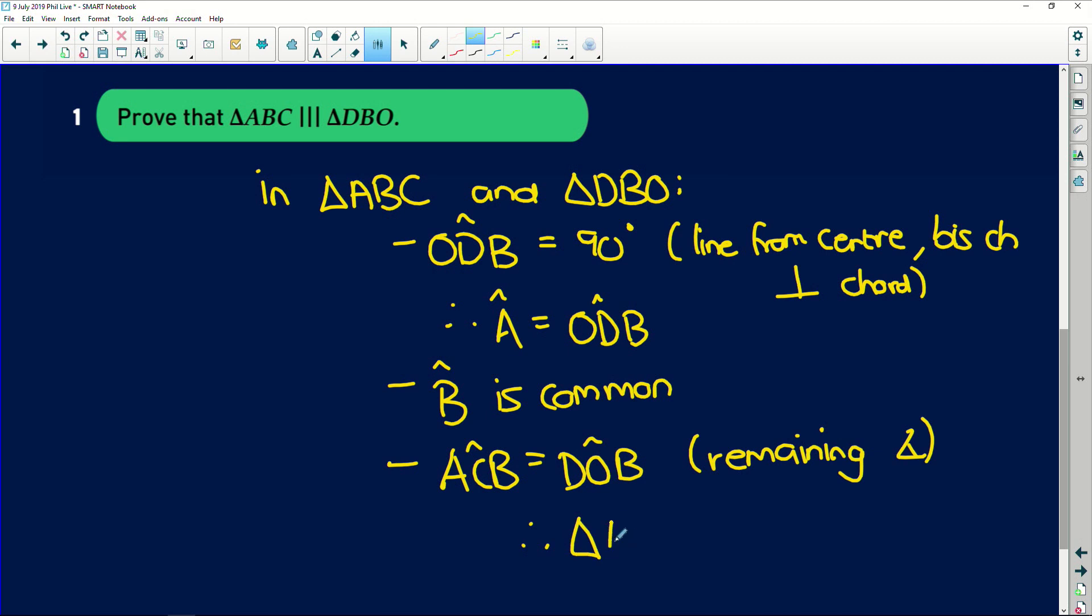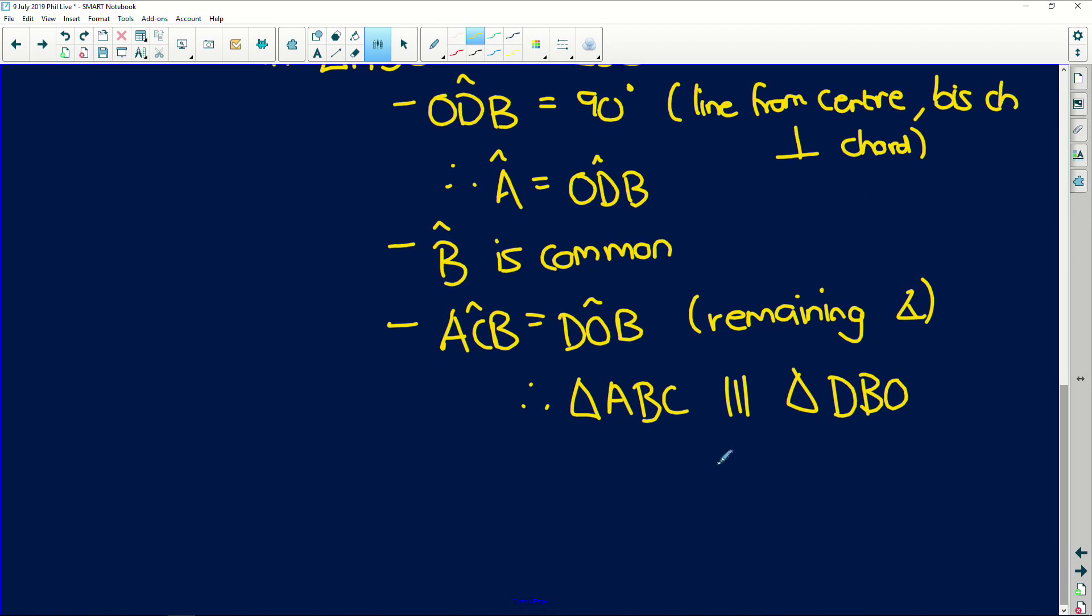Therefore, triangle ABC is similar to triangle DBO. Remember, if you're going to claim similarity, you must have a reason. Angle, angle, angle. Easy peasy, lemon squeezy.